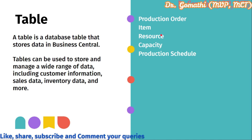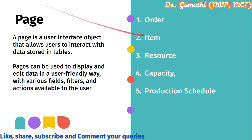The resource ID is used in the production order as a foreign key. For the capacity table, you can add capacity ID, capacity description, and capacity type — and likewise add capacity ID as a secondary key in the production order for joining. For the production schedule table, add schedule ID, start date, end date, production order ID, item ID, quantity, resource ID, capacity ID, status, etc.